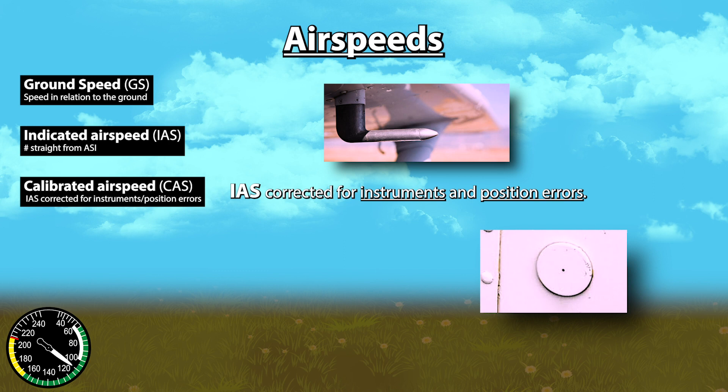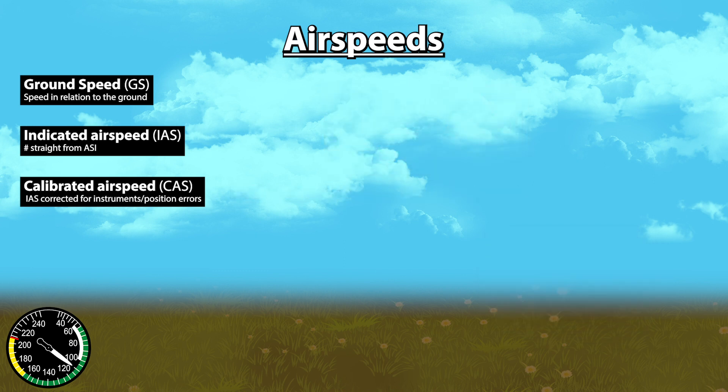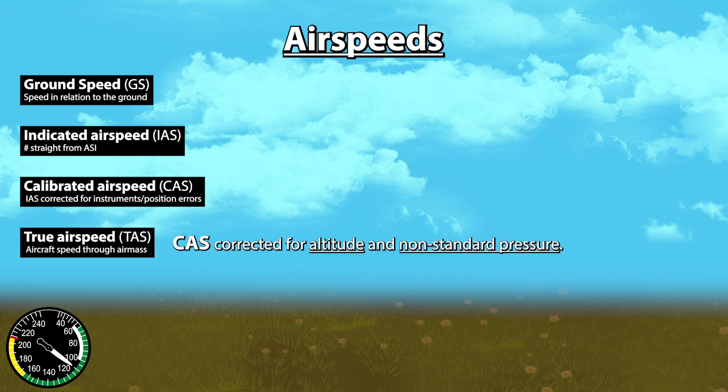Calibrated airspeed was primarily used as a middle step to calculate true airspeed, and technology has evolved enough that modern glass cockpits just give you that information straight up. Speaking of which, true airspeed is technically calibrated airspeed corrected for altitude and nonstandard pressure.